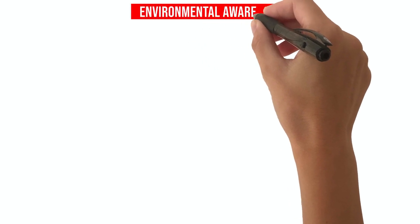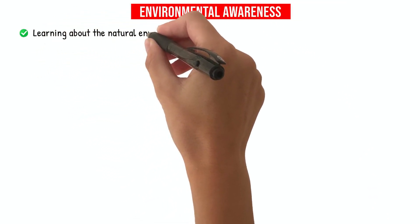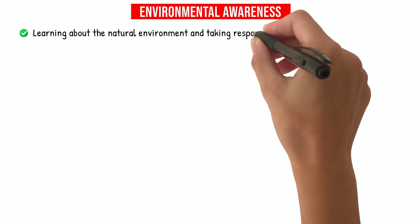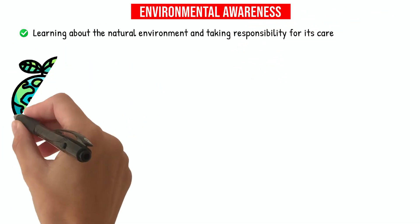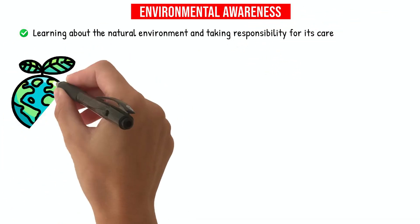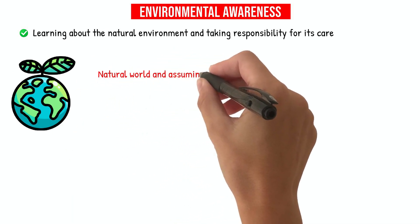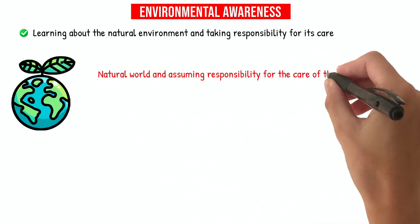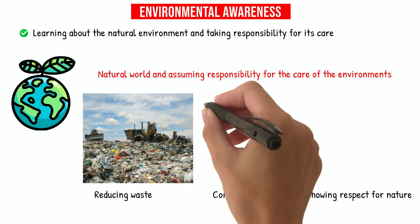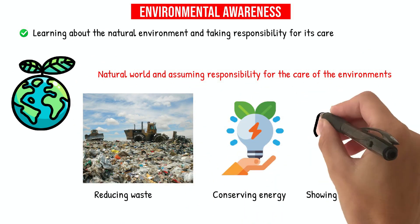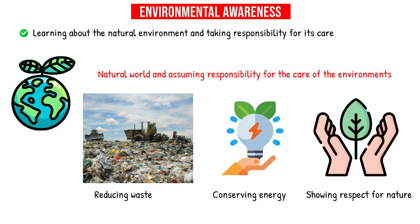Environmental awareness involves learning about the natural environment and taking responsibility for its care. Children can become more environmentally aware by gaining knowledge about the natural world and assuming responsibility for the care of the environments in which they live. This can involve actions such as reducing waste, conserving energy, and showing respect for nature.